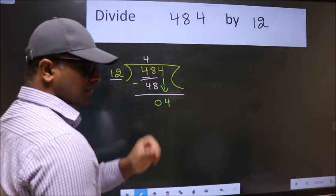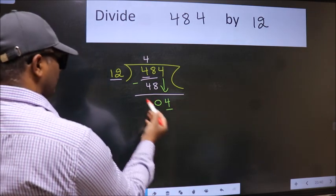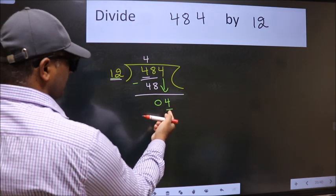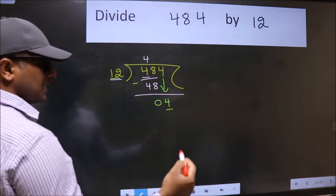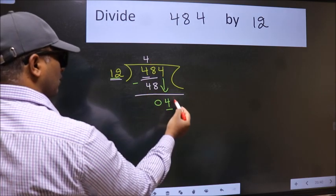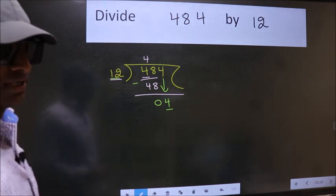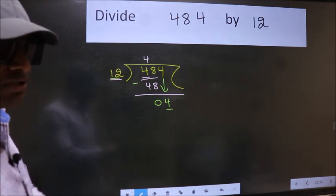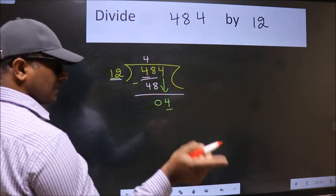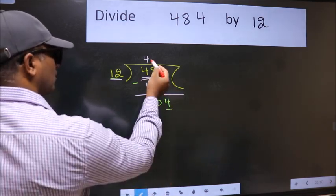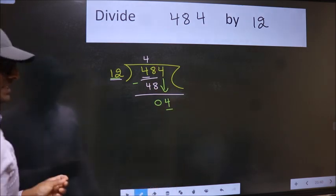After this step, the mistake happens. And the mistake is this: here we have 4 and here 12, 4 is smaller than 12. So what many do is they directly put dot, take 0, which is wrong. Why is it wrong? Because just now you brought this number down.